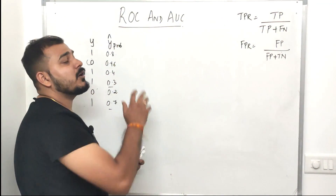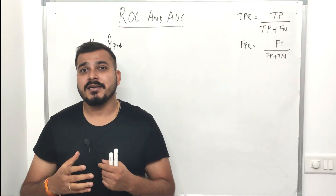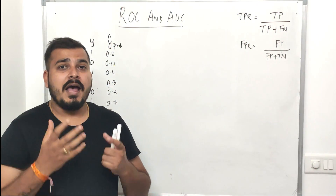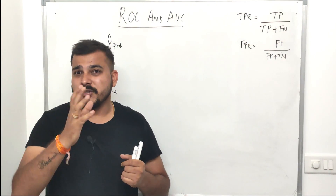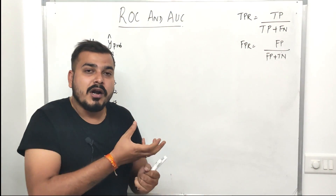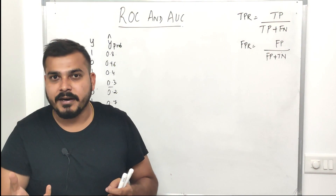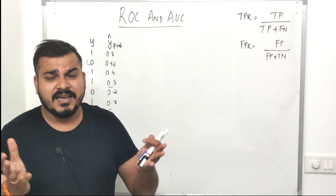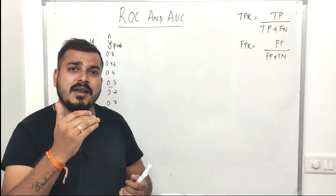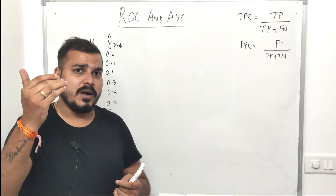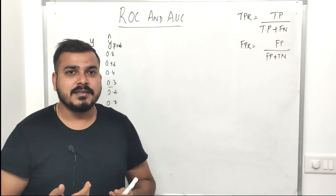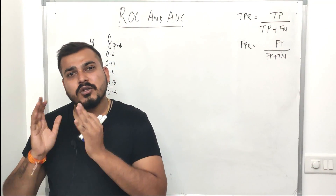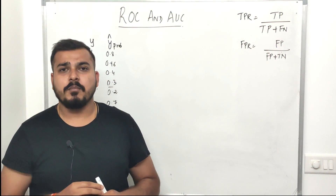In this video we'll try to understand ROC and AUC curve. Remember, ROC AUC curve is mostly used for binary classification problems. It's important because suppose if you are implementing logistic regression and your model has predicted some probabilities — what threshold should you decide? By default, logistic regression considers anything greater than 0.5 as 1, and anything less than 0.5 as 0.